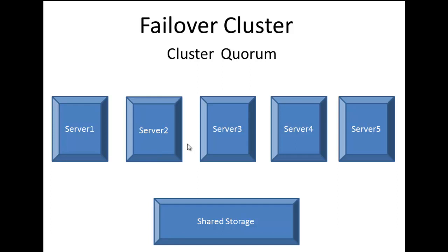The cluster will continue to work. The cluster quorum configuration has a direct effect on the high availability of the cluster. It helps ensure that the failover cluster can start properly or continue running when the active cluster membership changes. Even though the function of the cluster depends on the quorum vote, that's not the only thing the function of the cluster depends on — it also depends on network connectivity between cluster nodes.